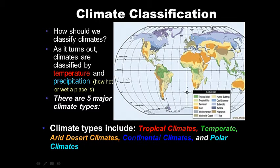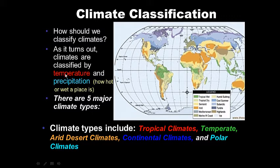Let's start off by learning how we classify climates. This map is basically a climate map — it tells you what kind of climates are distributed throughout the world. Climates are classified by temperature and precipitation: how hot or how wet a place is.